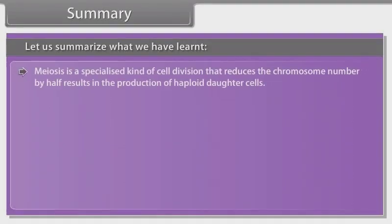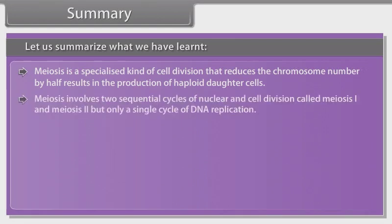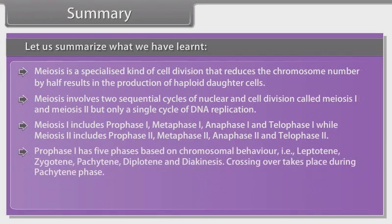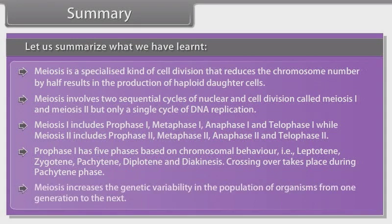Meiosis is a specialized kind of cell division that reduces the chromosome number by half, resulting in the production of haploid daughter cells. Meiosis involves two sequential cycles of nuclear and cell division called meiosis I and meiosis II, but only a single cycle of DNA replication. Meiosis I includes prophase I, metaphase I, anaphase I, and telophase I, while meiosis II includes prophase II, metaphase II, anaphase II, and telophase II. Prophase I has five phases based on chromosomal behavior: leptotene, zygotene, pachytene, diplotene, and diakinesis. Crossing over takes place during pachytene phase. Meiosis increases the genetic variability in the population of organisms from one generation to the next.